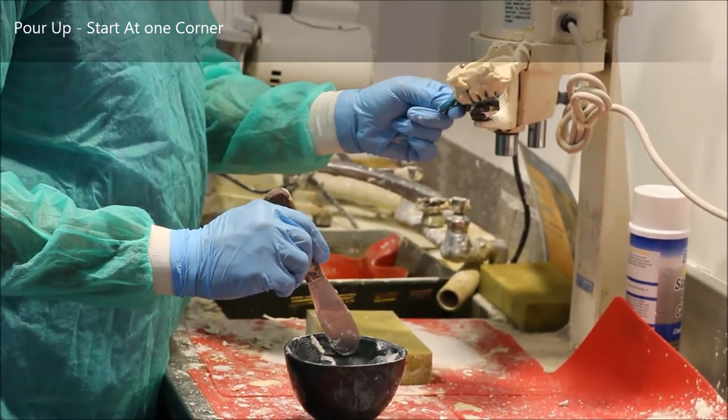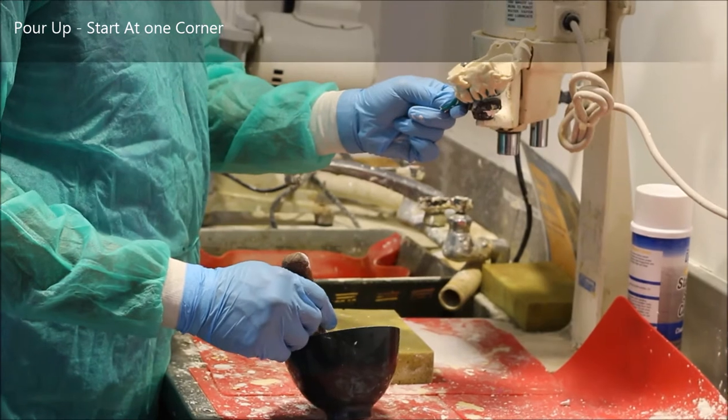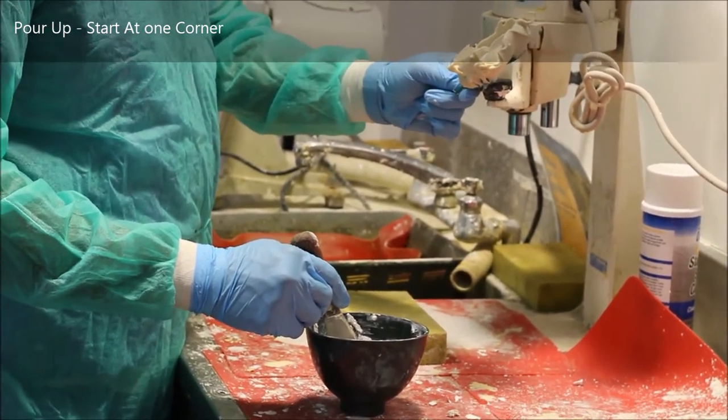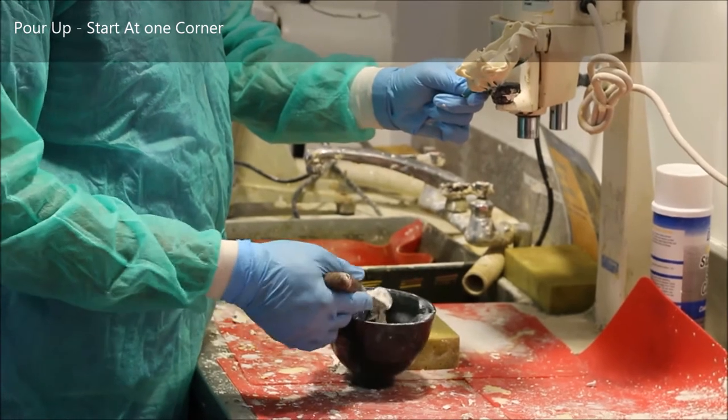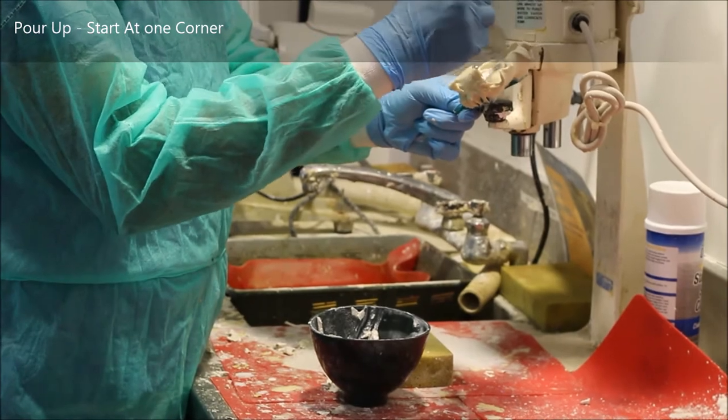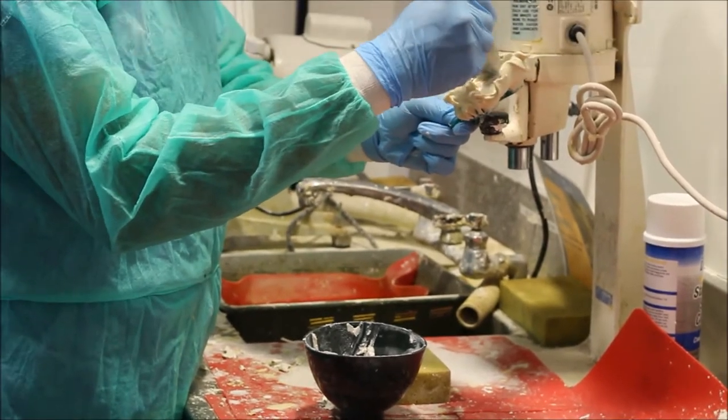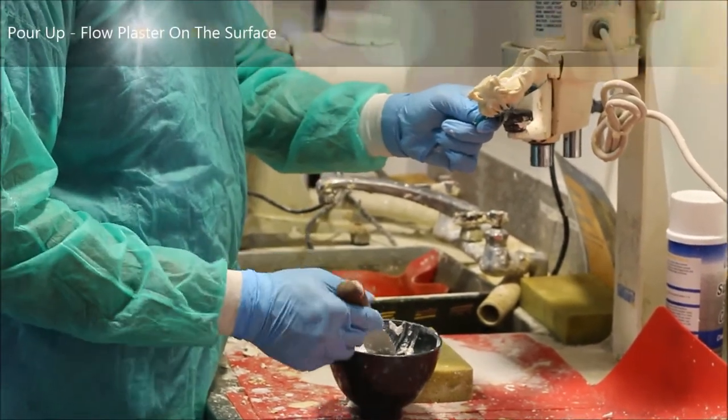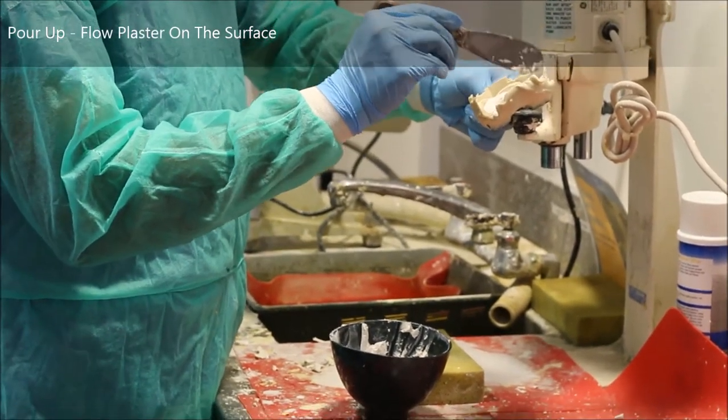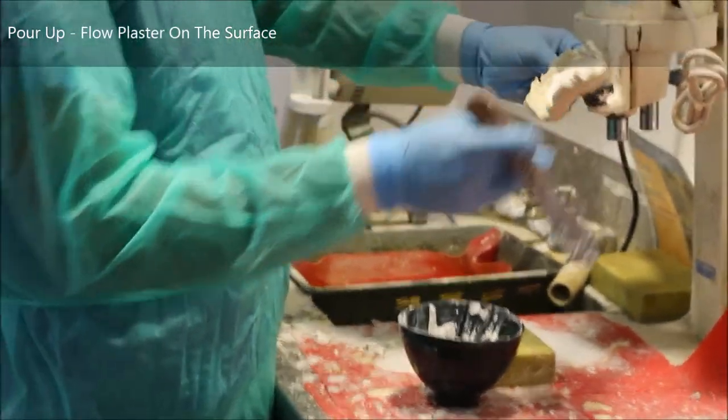Once you have your impression on the vibrator, as you can see here, you want to incline it downward, take a little bit of plaster and put it at the distal most corner. So in this particular case I started at the second molar, and I'm going to let the plaster flow down gently covering the surface of the impression as it moves from tooth to tooth. You change the incline once it reaches around halfway to the central incisors, and now you're going to let it slide all the way down.